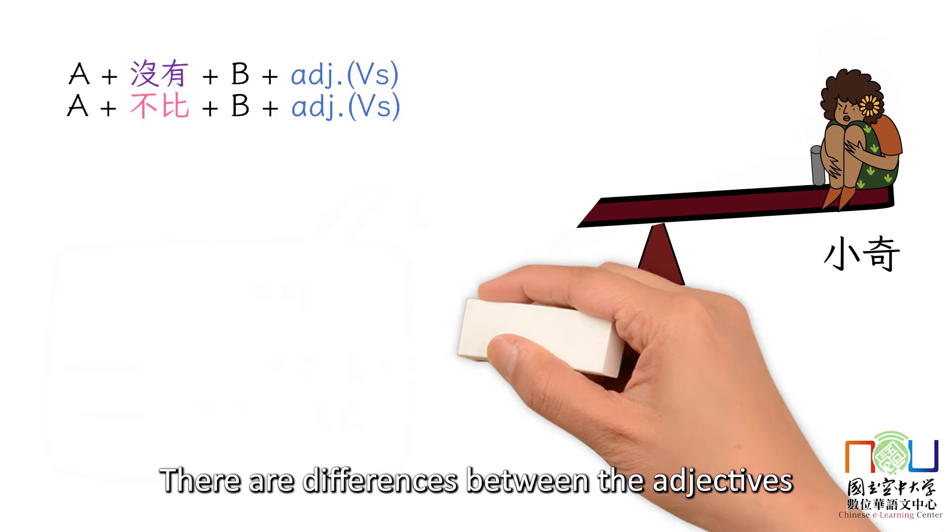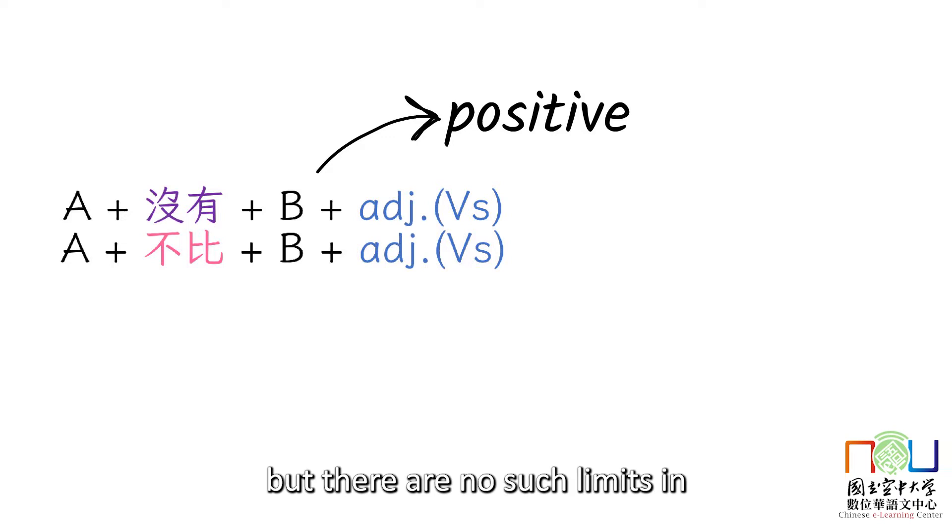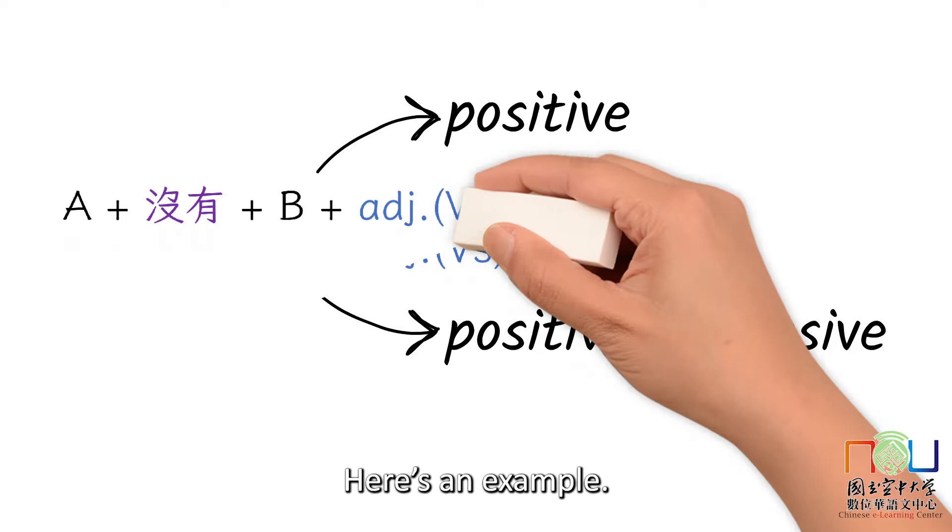What's more, there are differences between the adjectives used in these two negative forms. 没有 is always used with a positive adjective, but there are no such limits in A 不比 B plus adjective. Here is an example.